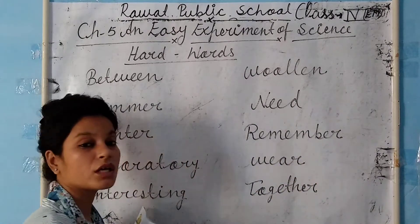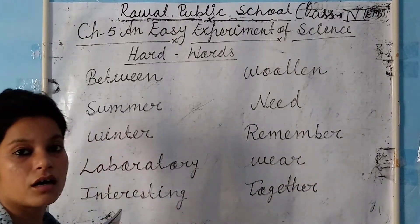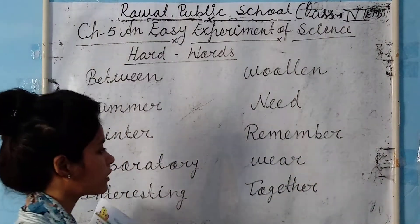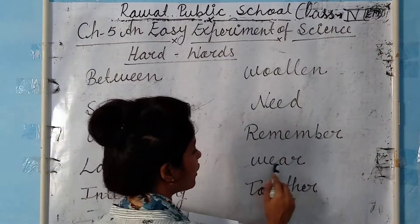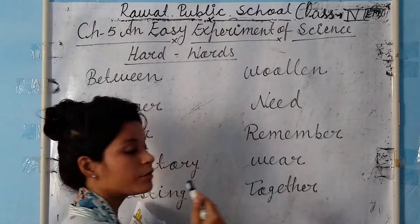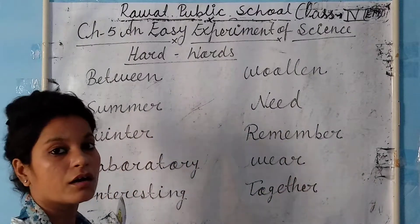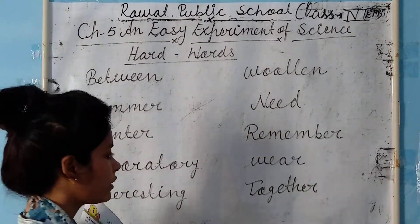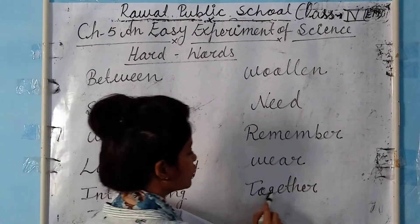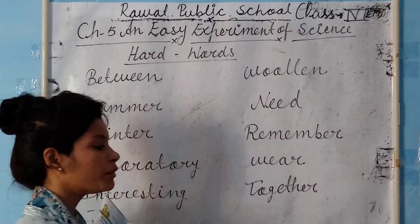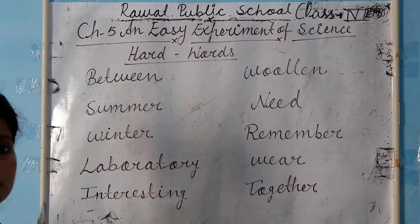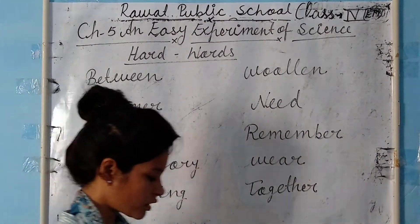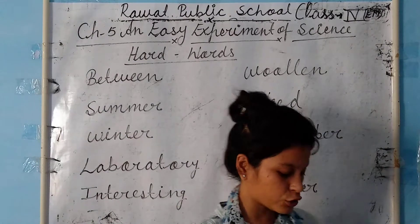REMEMBER means YAD RAKNA. WEAR BEAR means PEHANNA. TOGETHER means SARSA. Now start — open your book.